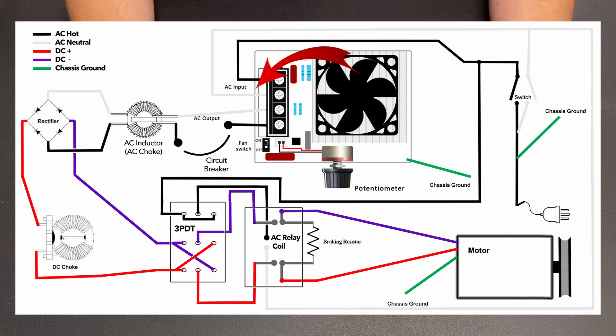The other leg of the T goes to the SCR voltage controller, and everything there is the same as other SCR hookups. So it's going to go through the circuit breaker, the AC inductor, the rectifier, the DC choke, and then we're going to go to our triple pole double throw switch.